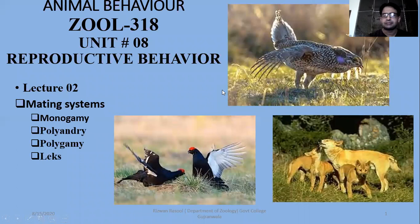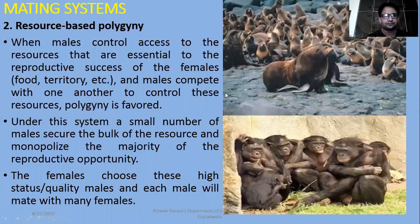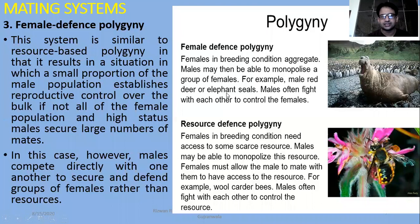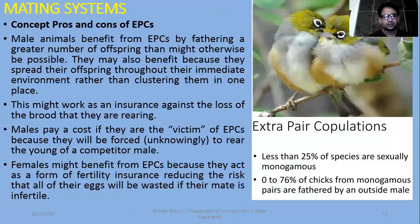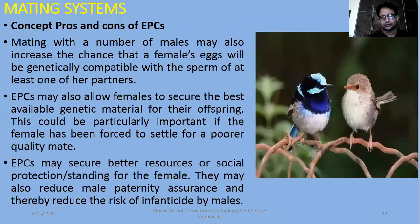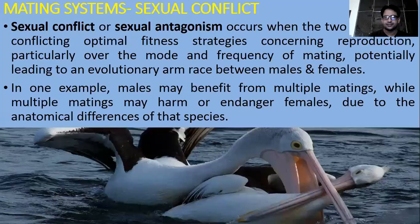Bismillahirrahmanirrahim. In the previous lecture we discussed mating systems, including monogamy, resource-based polygyny, female defense polygyny, polyandry, lek-based polygyny, and polygynandry. Now we are going to have some discussion about sexual conflict among organisms that usually exists for having greater reproductive success between males and females in a pair.